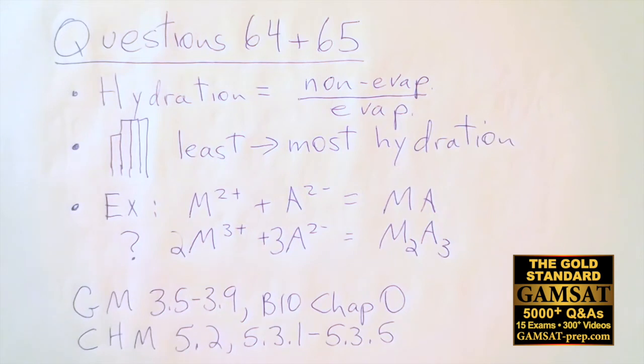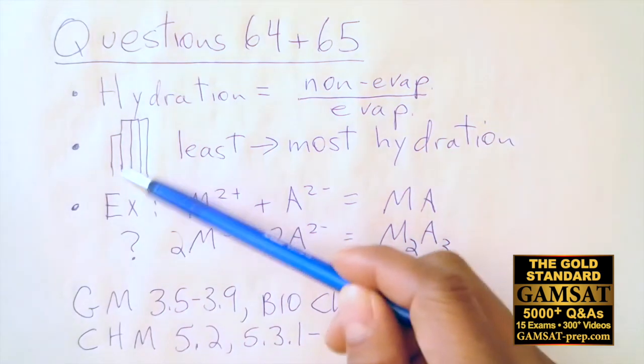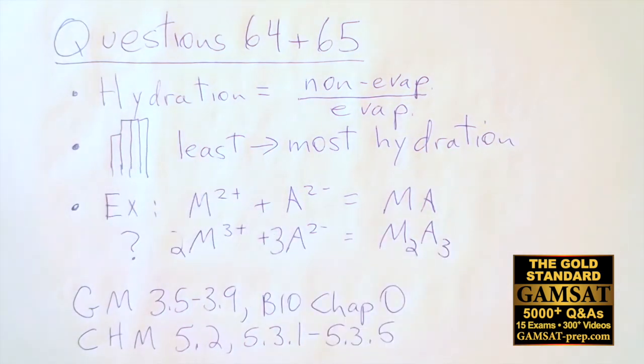So those set of graphs are definitely the weakest. Now let's see if those are the most hydrated, keeping in mind that most hydrated is non-evap over evap. Well, of all the graphs, the one with the smallest percentage of non-evap is definitely zinc polycarboxylate.